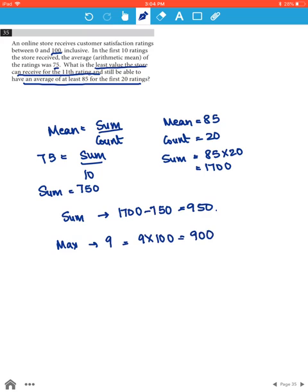Because we want to find the least value for 11th, the ratings for the 12th to the 20th customer would be 9 into 100, which is 900. Therefore, the least possible value for the 11th term will be 950 minus 900, which would be equal to 50.